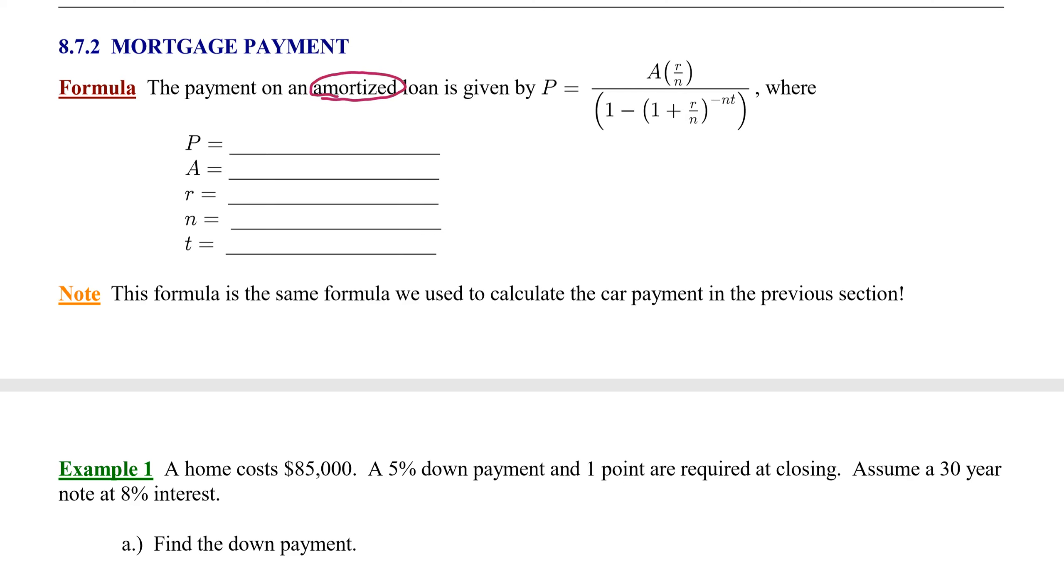Now the variables here are the same as they were when we covered these with cars. P represents our payment, our regular payment. A is the amount of the loan. R is the rate of interest and you know by now that has to be in decimal form. N is the number of payments per year and this is equal to the compounding period like we saw with compound interest. And T is the term of the loan or the time and that always has to be measured in years.